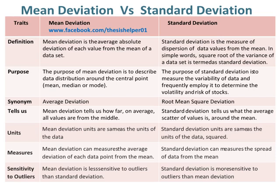Whereas, the synonym of standard deviation is root mean square deviation. Mean deviation tells us how far, on average, all values are from the middle. Whereas, standard deviation tells us what the average scatter of values is around the mean.